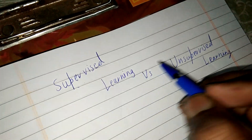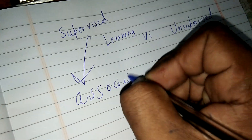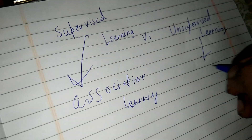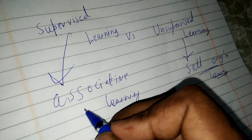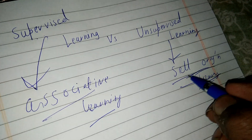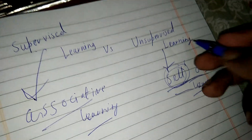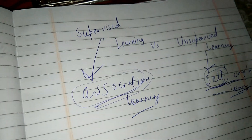In this video I am going to tell you about supervised learning versus unsupervised learning. Supervised learning is also known as associative learning, while unsupervised learning is also known as self-organization learning. Self-organization means something not taught by someone — which you haven't learned from anyone. Associative means you learn with assistance from somebody or something.